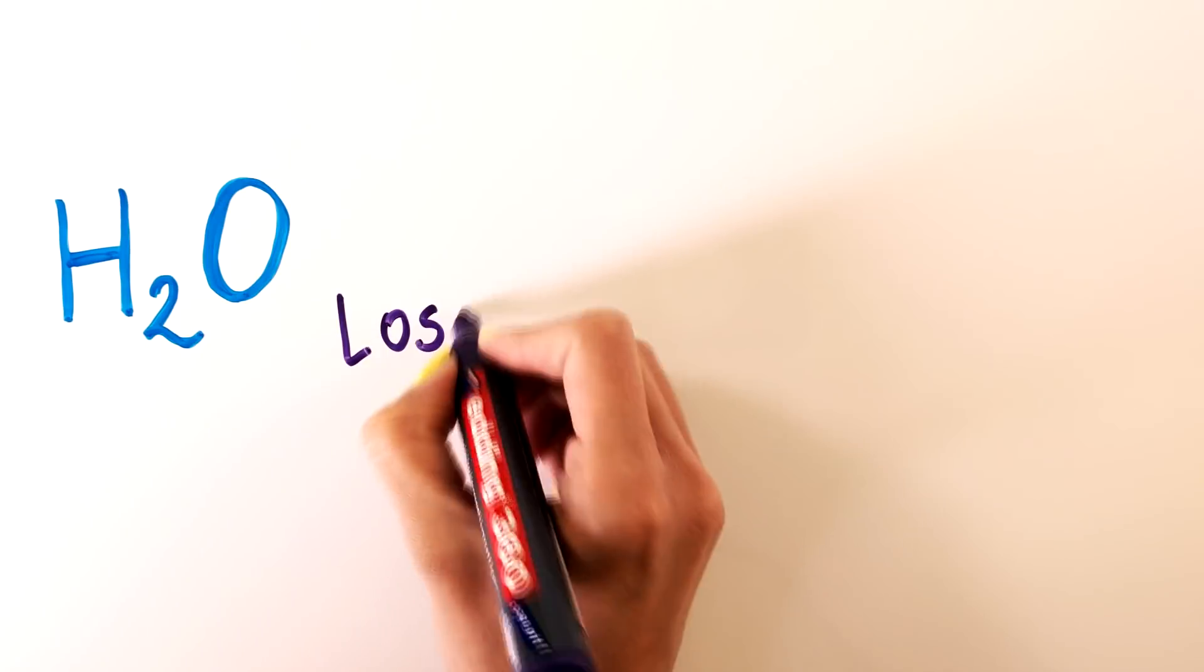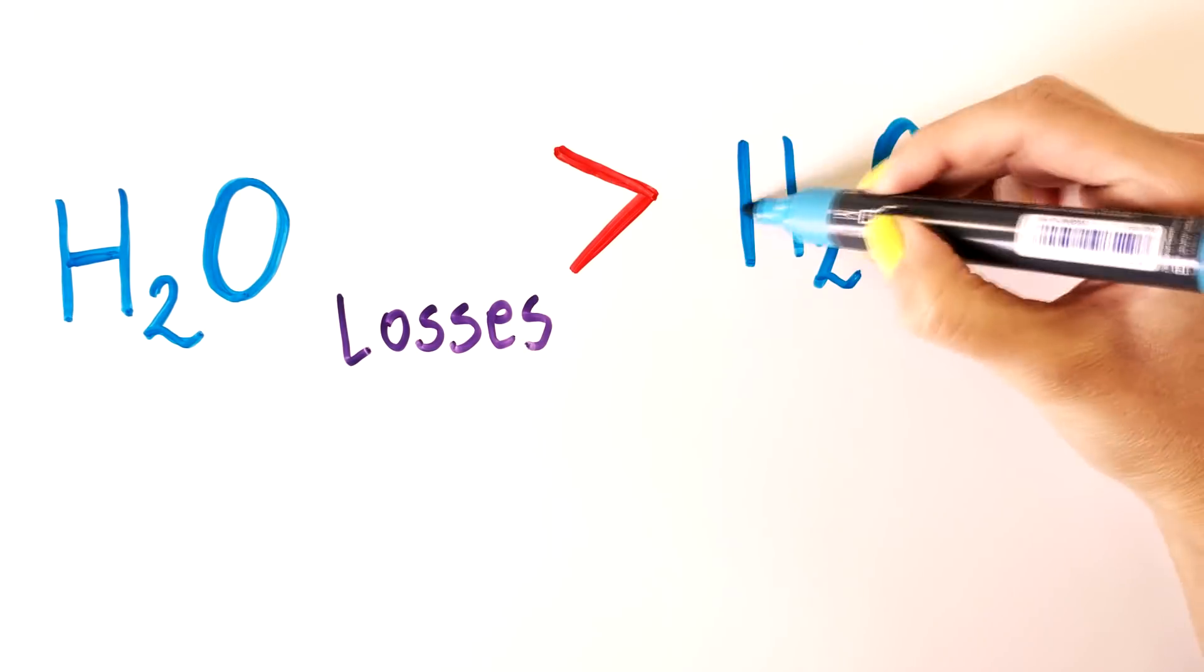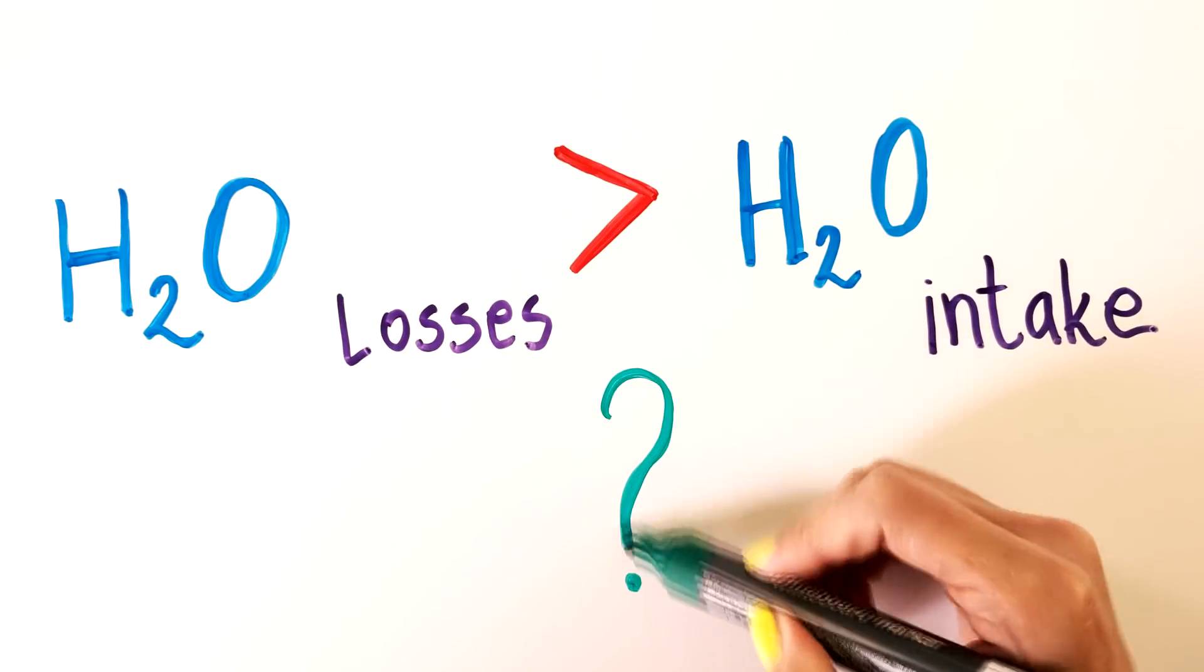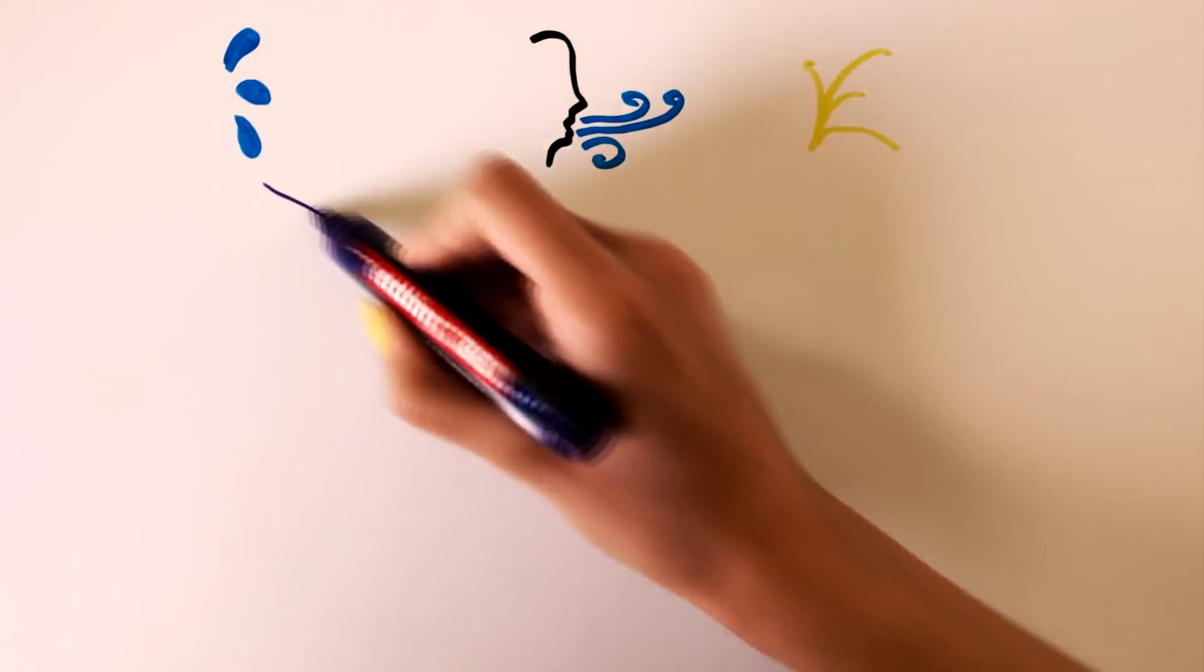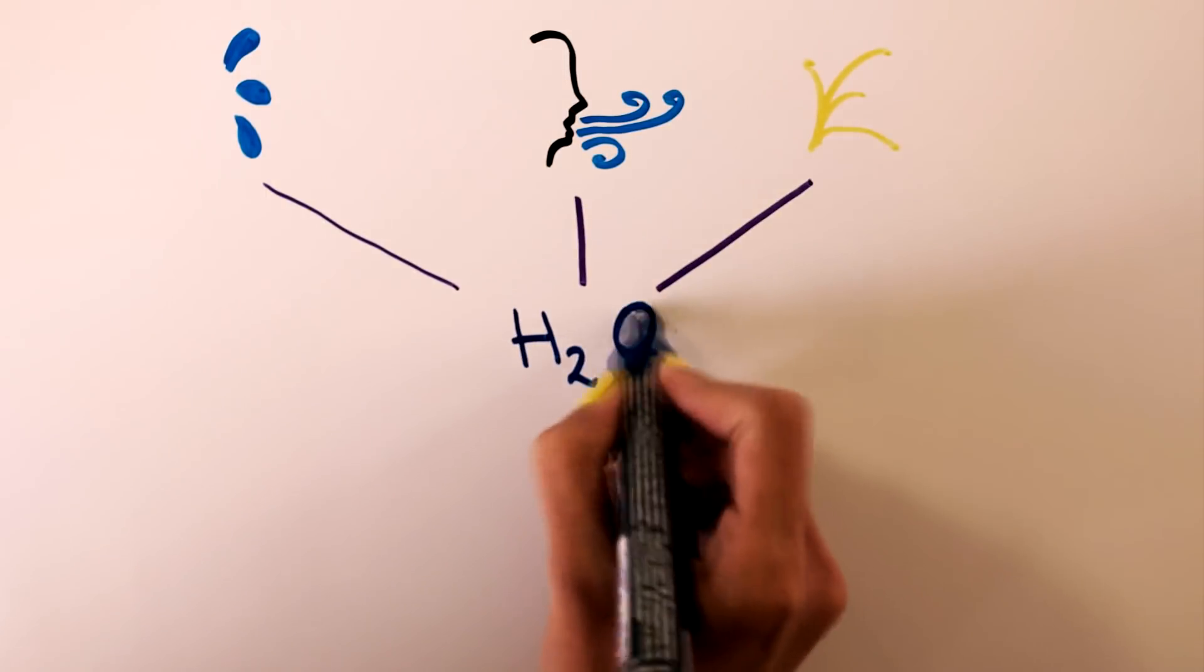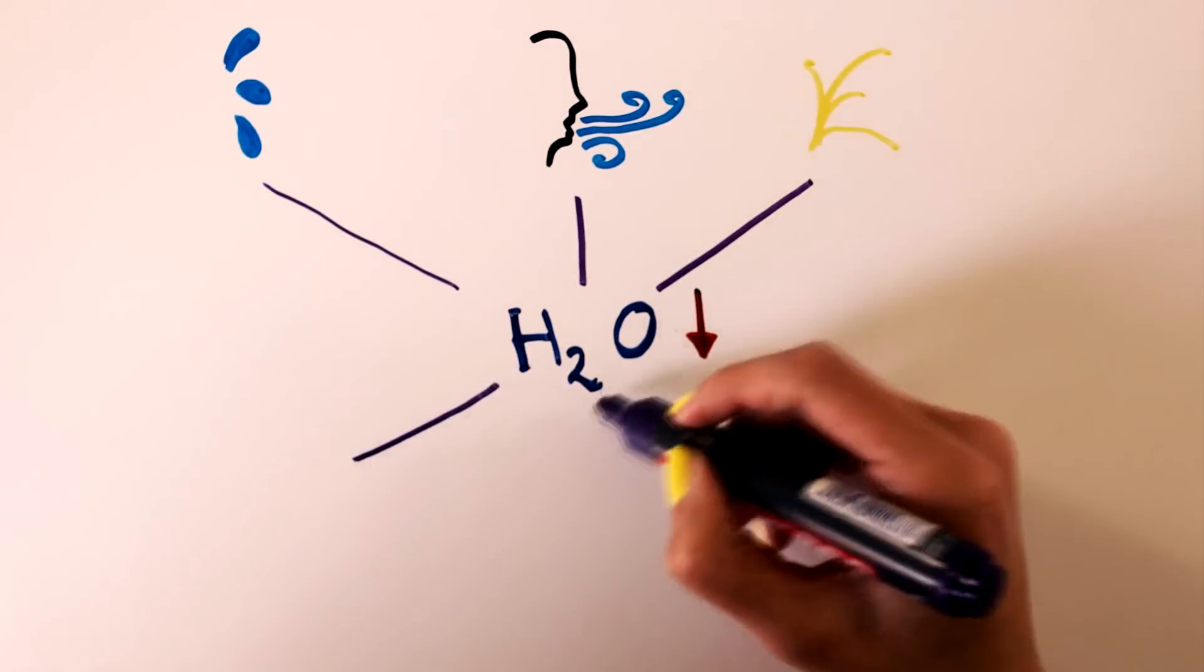So these receptors can help us know if we are thirsty, but what happens when water losses are greater than water intake? We lose water constantly through sweating, breathing and urination. Being dehydrated often and for a long time can cause severe consequences.